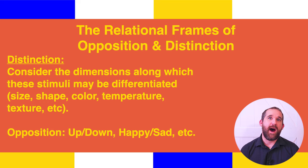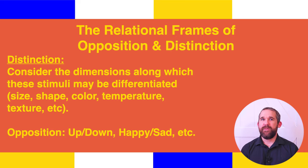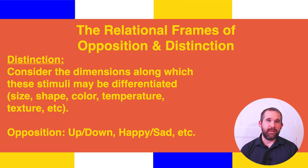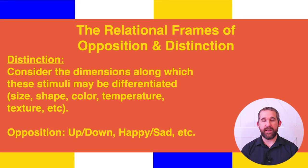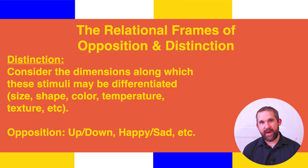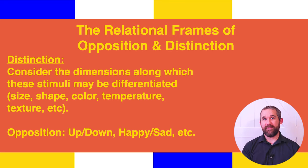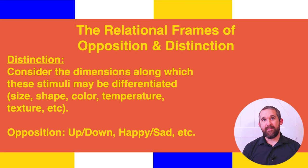Next, let's discuss the relational frames of opposition and distinction. To be able to notice differences, we first need to be able to coordinate sameness and similarity. A child may be able to match the same but may not readily see the differences until they are directly trained to notice them. Distinction gets into the details of how things are different in a relational network, considering dimensions like size, shape, color, temperature, and texture. Opposites are fairly straightforward: up is the opposite of down, laughter is the opposite of crying, happy is the opposite of sad. When these frames are added to coordination and sameness, they rapidly expand the possibilities of combinatorial entailment, and a three or four-year-old will begin to see connections where we otherwise wouldn't have seen them.